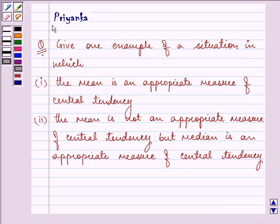Hello and how are you all today? My name is Priyanka and the question says give one example of a situation in which firstly the mean is an appropriate measure of central tendency.